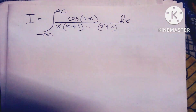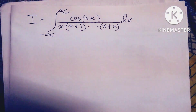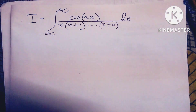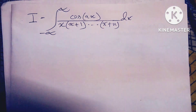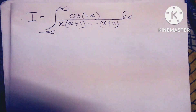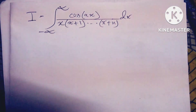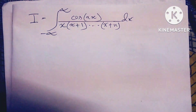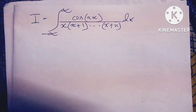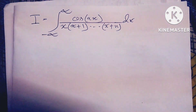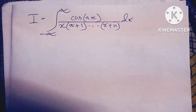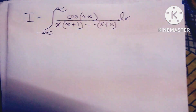Hello dear friends, welcome to my channel. Today's discussion is very interesting. We consider the integral i equals the integral from minus infinity to infinity of cos(ax) divided by x(x+1)...(x+n) dx.